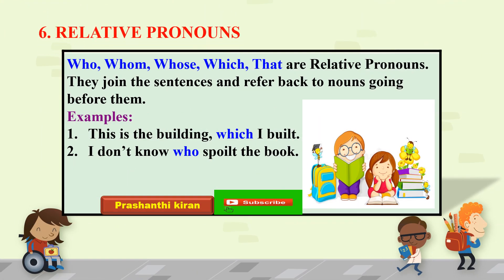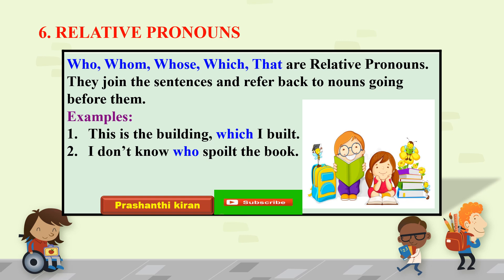Relative pronouns: Who, Whom, Whose, Which, That are relative pronouns. They join the sentences and refer back to nouns going before them. Examples: This is the building which I built. I don't know who spoiled the book. In these two examples, Which and Who are the relative pronouns.